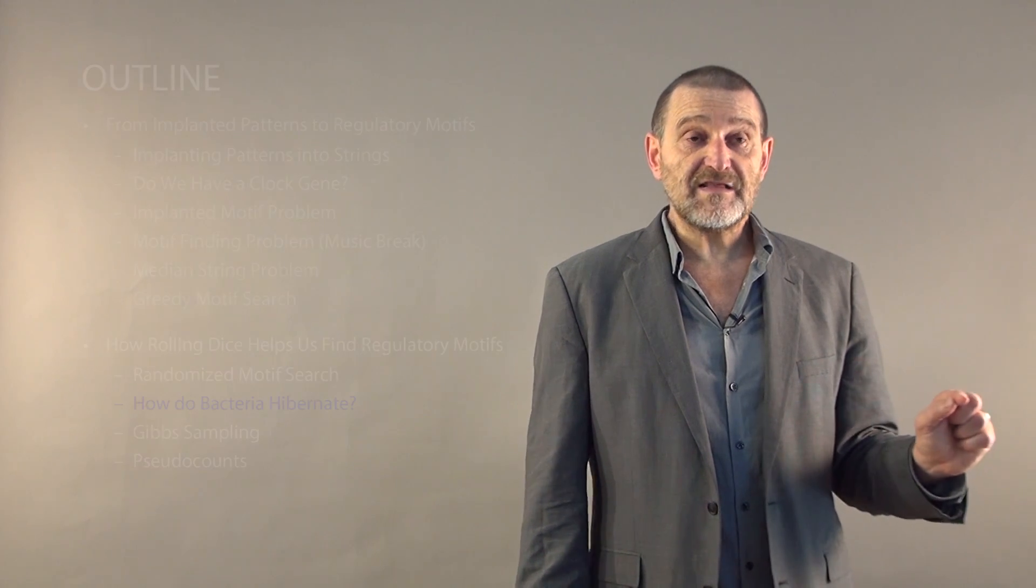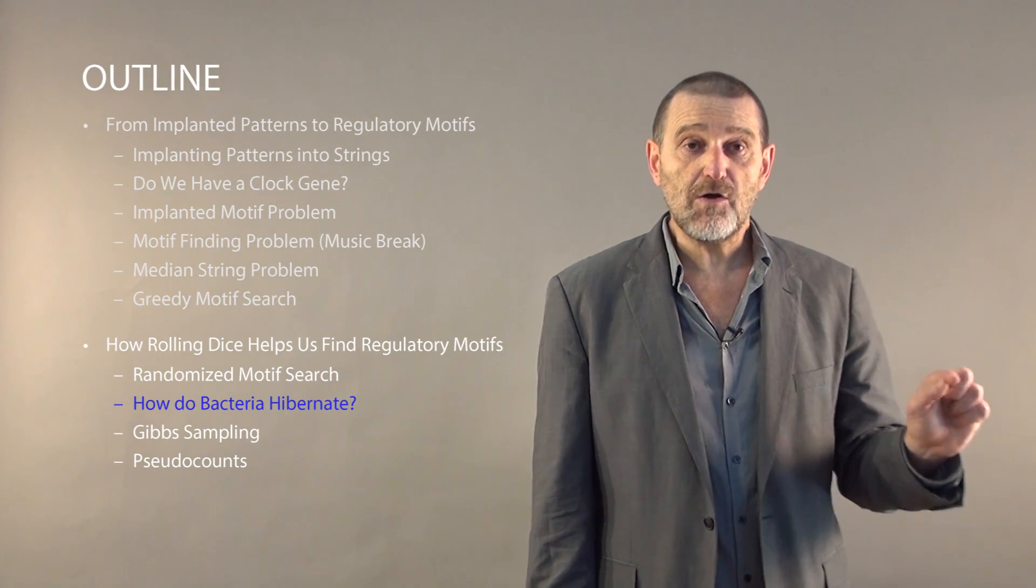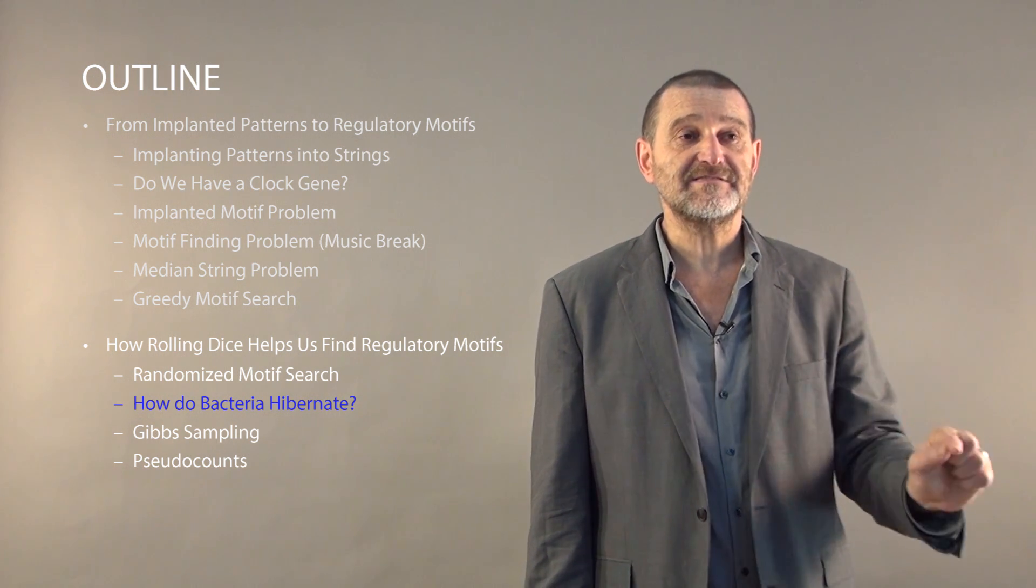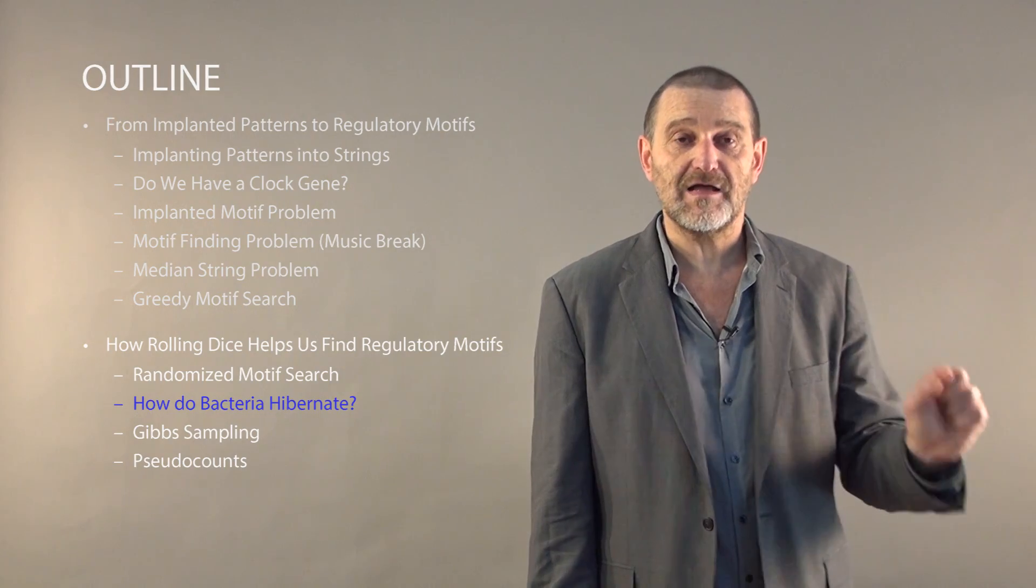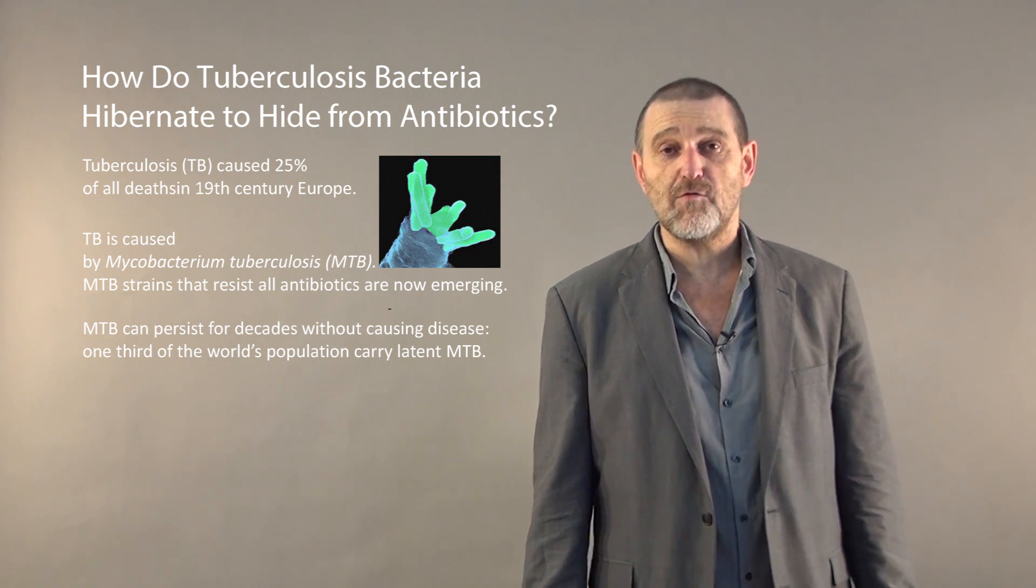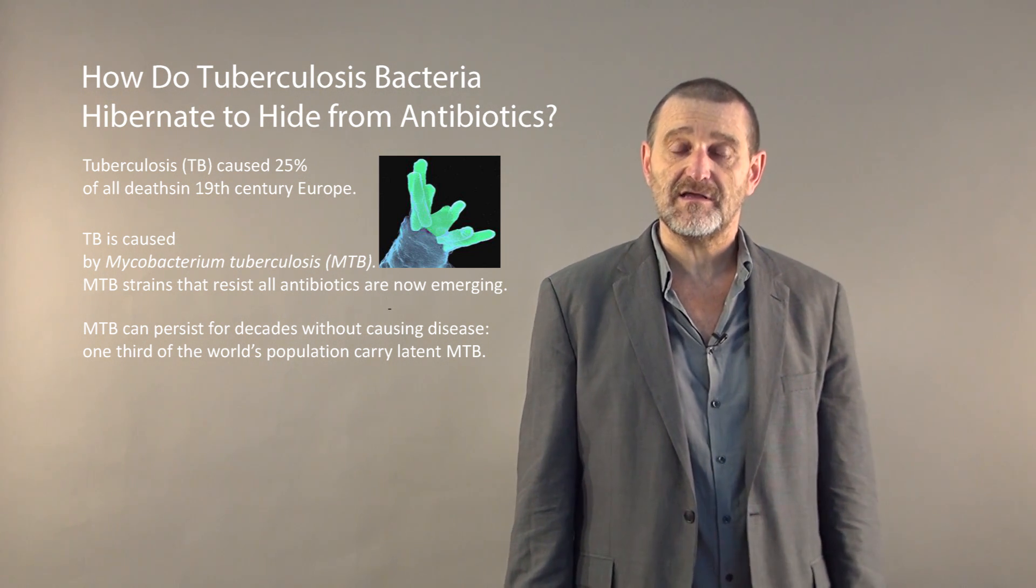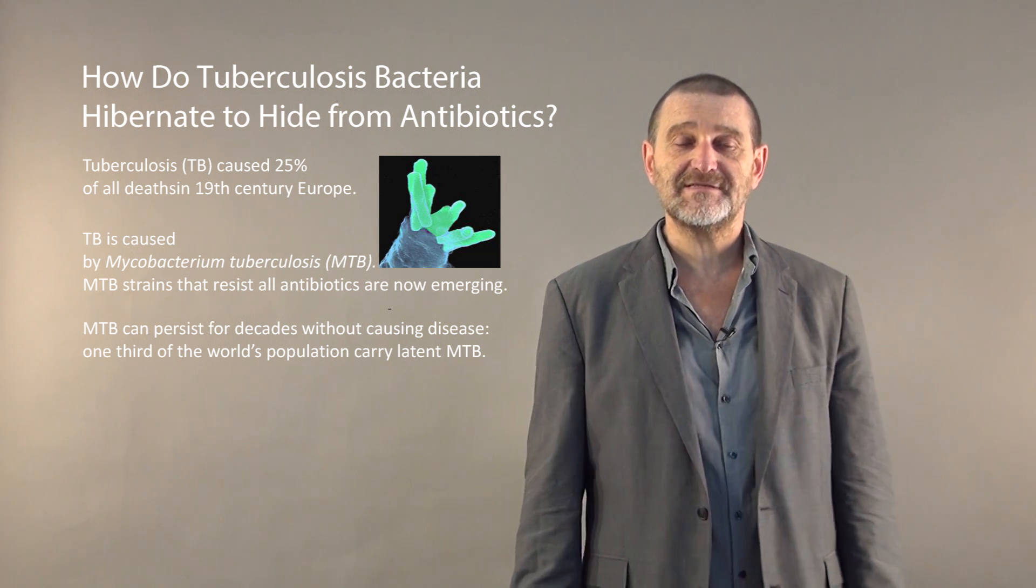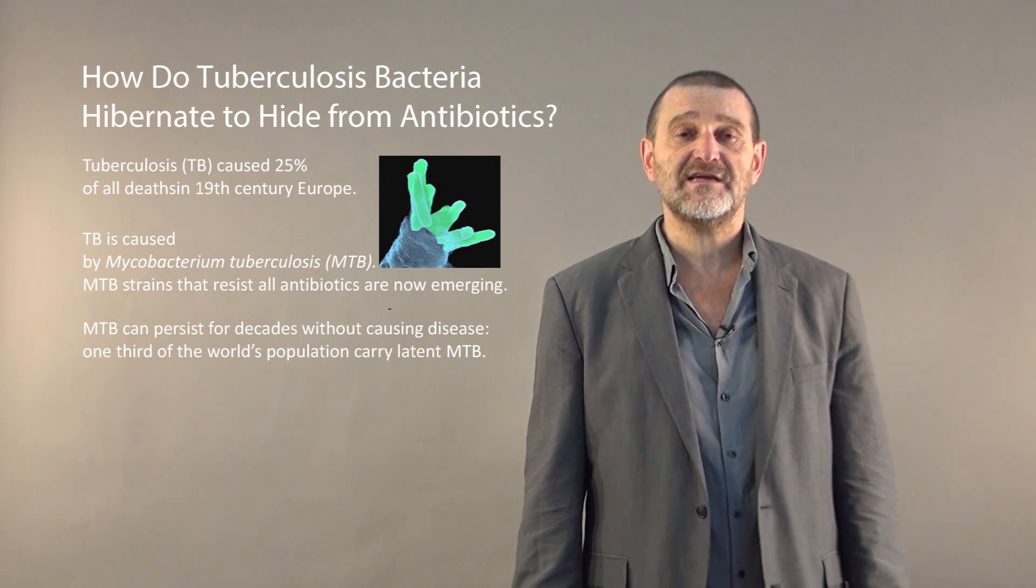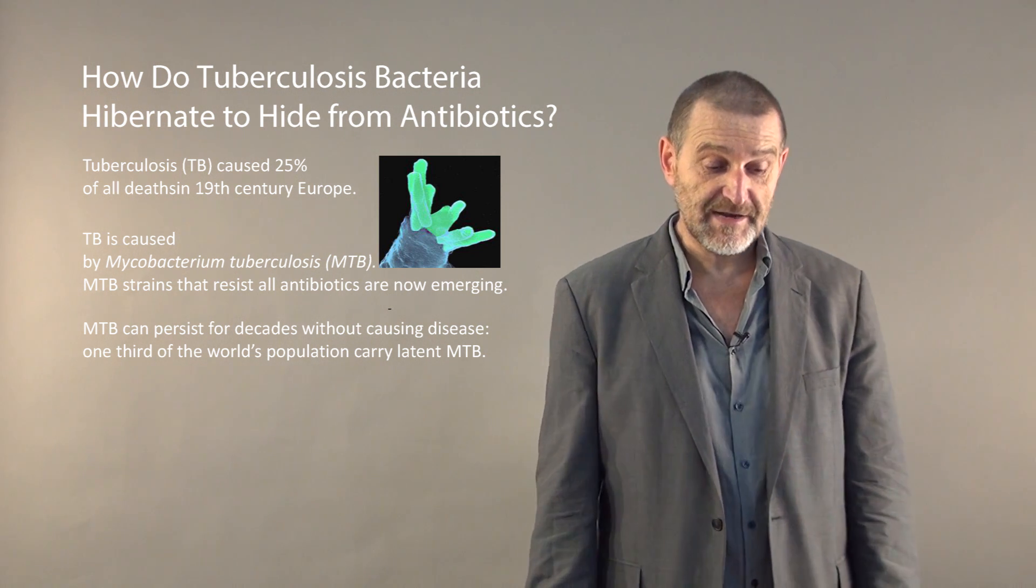We now move to the next topic, which is how do bacteria hibernate, to try to apply our motif finding algorithms to real biological problems. To figure out how our algorithms work on real biological data, we will start by analyzing tuberculosis. Tuberculosis is a deadly disease that killed a quarter of the population in Europe in the 19th century. Unfortunately, humanity is not done yet with tuberculosis since tuberculosis strains that resist all antibiotics are now emerging.